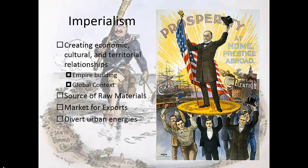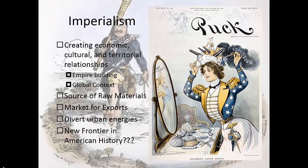So, imperialism. Why are we imperializing? We want to create economic, cultural, and territorial relationships — we're building an empire. We're looking at the world in a global context, and we see that our best pride is our world power that we'll get through expansion. There are markets for exports and sources for raw material. Companies having problems during the Long Depression need sources for new revenue as well as markets, and this helps divert those urban energies and tensions created by new immigrants. And perhaps this is the new frontier in American history — after the American frontier closes in 1890, maybe we're expanding that frontier to new areas.